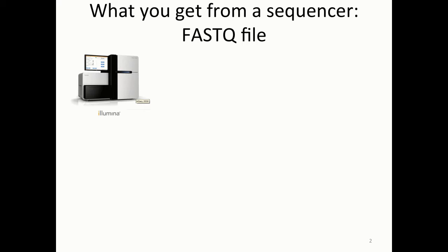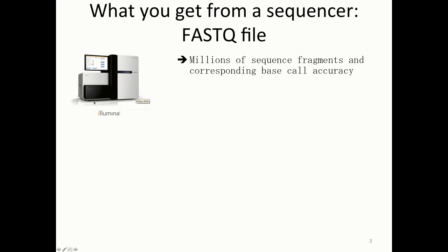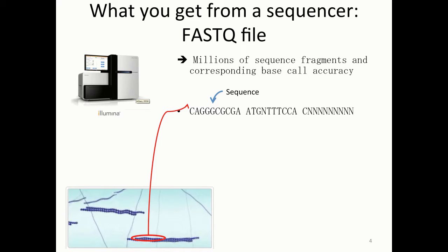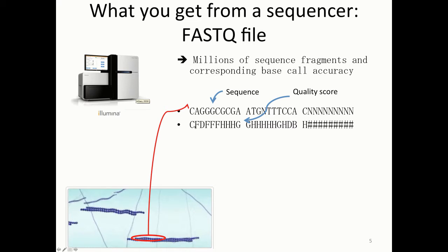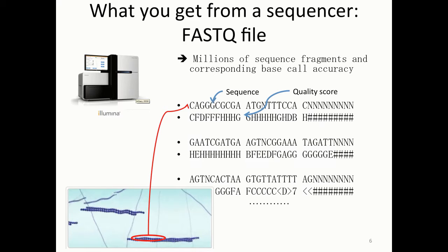What you get from a sequencer is a FASTQ file. Here is the Illumina sequencer, and what you get is millions of sequence fragments and corresponding base call accuracy. Here you have the DNA, and we read parts of this DNA from one end — in this example, I'm showing a 30 base pair read. In addition to the sequence, we also get the quality score, which basically gives the error rate for each base call. From the sequencer, we get sequence fragments and quality scores — not just for one, but millions of these.